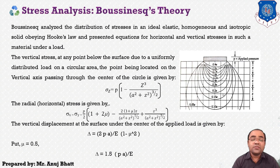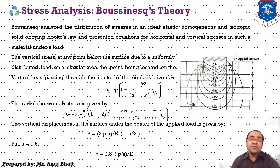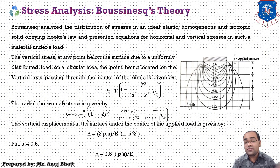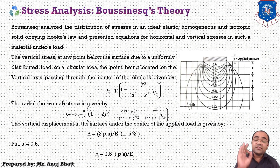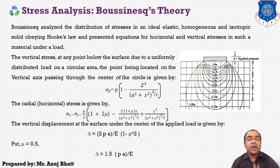As stress occurs, there may be the possibility of displacement. The vertical stresses are much more than the radial stresses, so we can consider the vertical displacement at the surface under the center of the applied load, given by delta equals 2 times p times a upon E, whole multiplied by 1 minus mu squared, where mu is the Poisson's ratio.